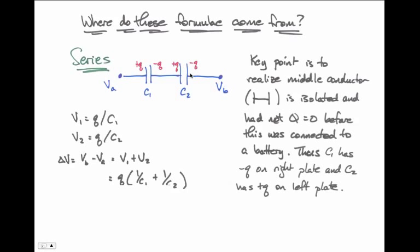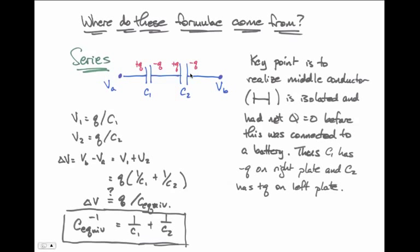If I factor out the Q, that equals Q times the quantity 1 over C1 plus 1 over C2. I would like to find a constant of proportionality such that delta V of the system equals the charge on the system divided by some equivalent capacitance. And what I find is that 1 over that equivalent capacitance is equal to 1 over C1 plus 1 over C2.